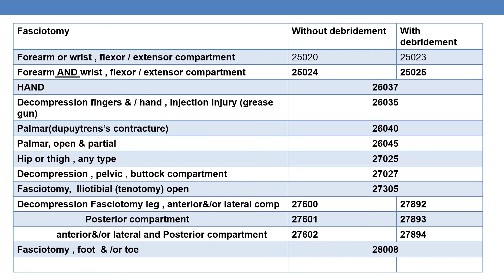For fasciotomy of the forearm or wrist, flexor or extensor compartment: without debridement, report 25020; with debridement, report 25023. For fasciotomy of the forearm and wrist, flexor or extensor compartment: without debridement, report 25024; with debridement, report 25025.